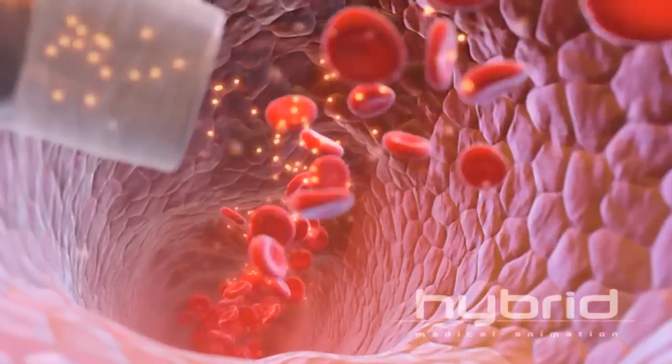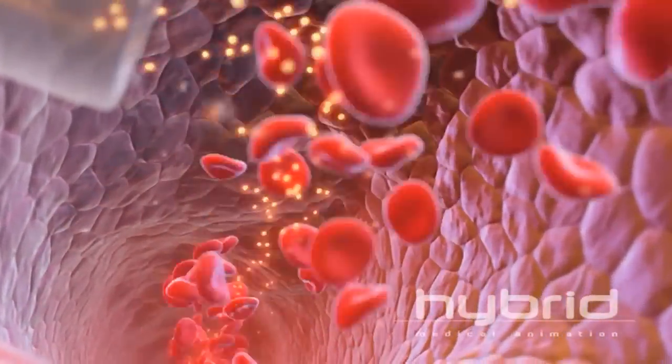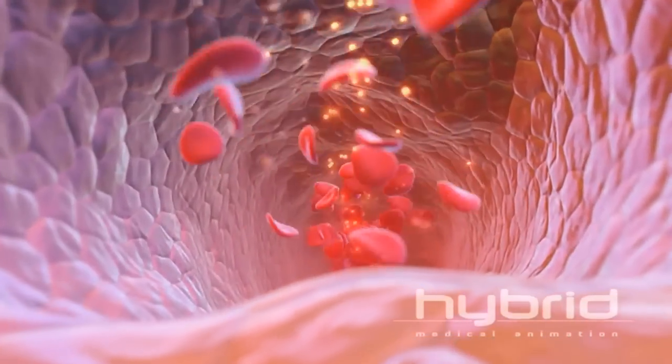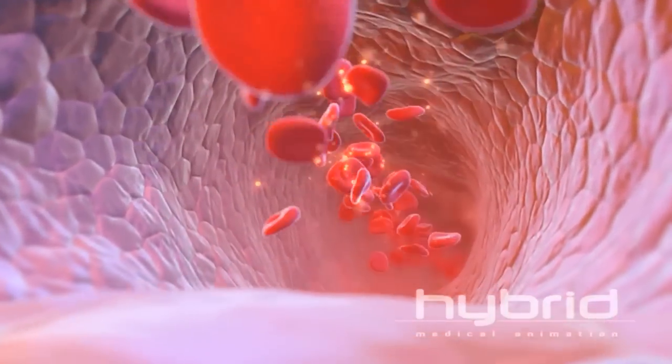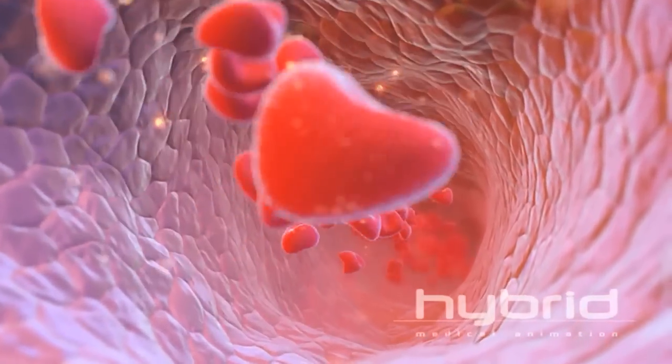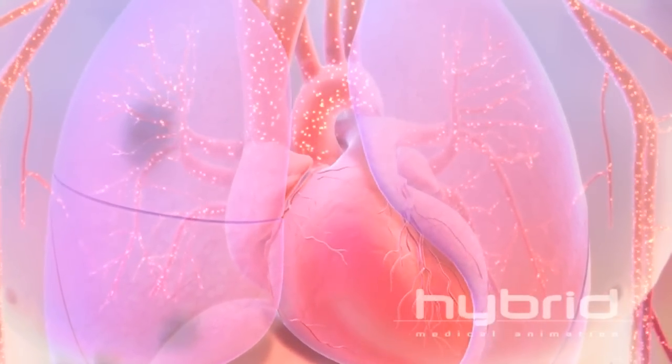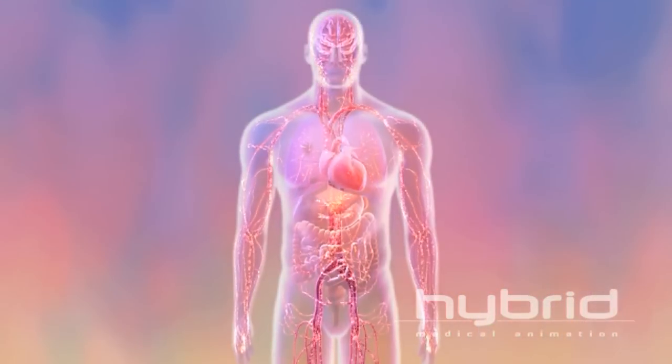Hundreds of millions of nanoparticles enter the vein in the patient's arm. Designed to function in the human circulatory system, the targeted nanoparticles can withstand intense turbulence as they travel through the heart and lungs and are then distributed throughout the body by the systemic circulation.